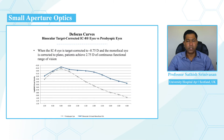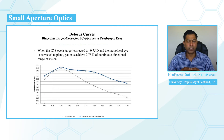This is the binocular target-corrected defocus curve where the IC8 eye was targeted for minus 0.75 diopters of myopia. The defocus curve shows that patients were able to achieve a continuous functional range of vision from emmetropia to over 2.75 diopters.